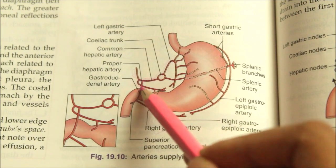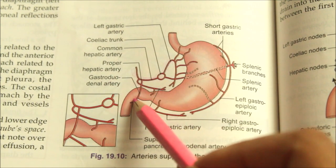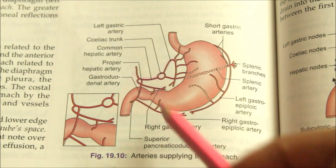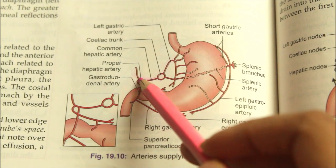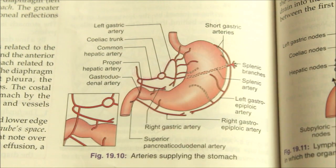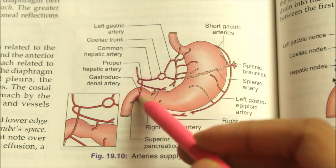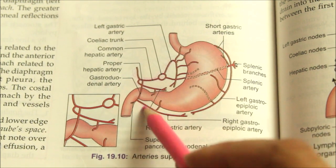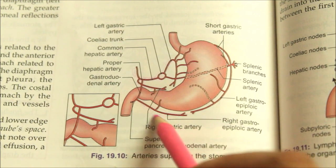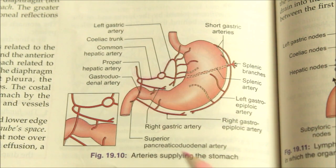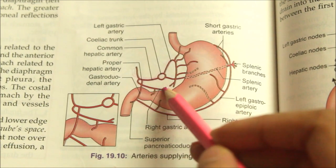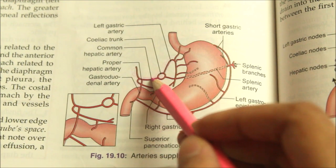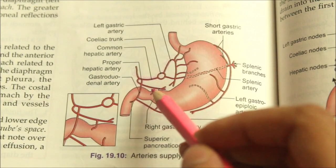The gastroduodenal artery divides to form the right gastroepiploic artery. The right gastric artery, a branch of the common hepatic artery, and the left gastric artery, a branch of the celiac trunk, both anastomose at the lesser curvature of the stomach.